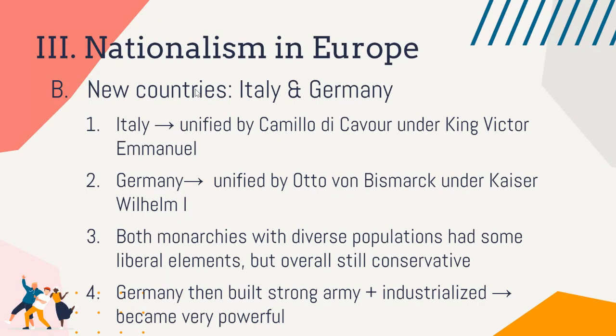Italy is unified by Camillo di Cavour under King Vittorio Emanuele, who becomes the first king of Italy — previously king of Piedmont and Sardinia. If you ever go to Italy, every city you visit has a Via Cavour and a Via Vittorio Emanuele. Cavour and Vittorio Emanuele are basically the George Washingtons of Italy — a really big deal.